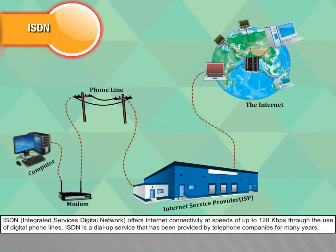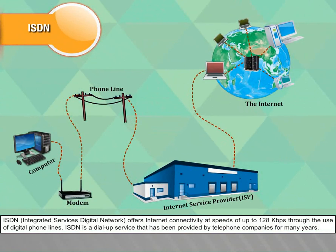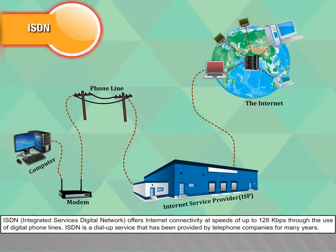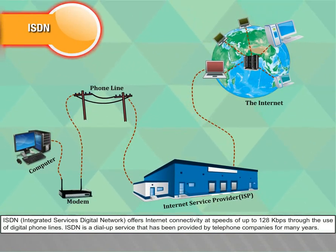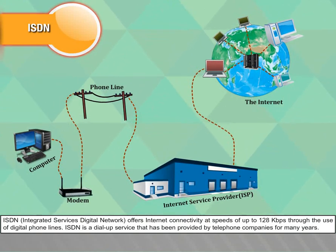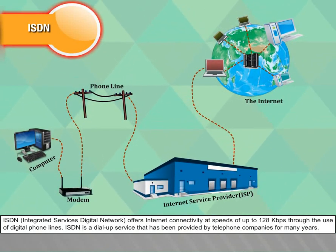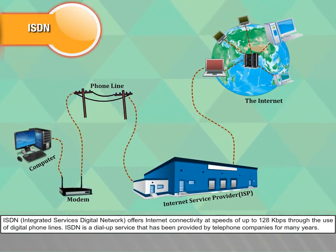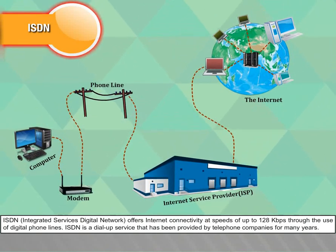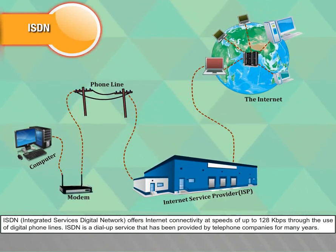ISDN, that is Integrated Services Digital Network, offers internet connectivity at speeds of up to 128kbps through the use of digital phone lines. ISDN is a dial-up service that has been provided by telephone companies for many years.